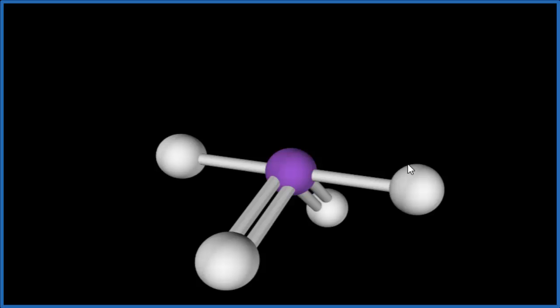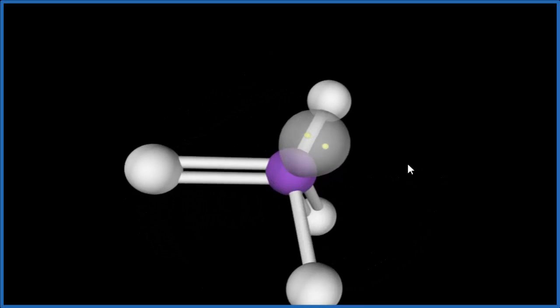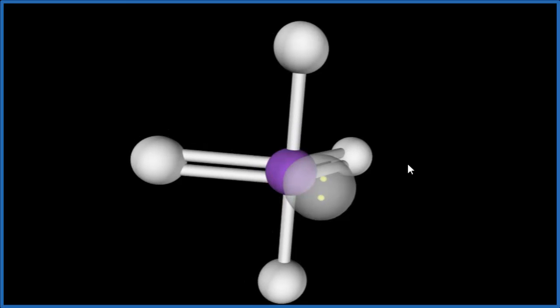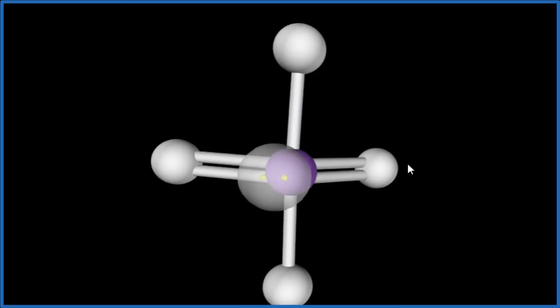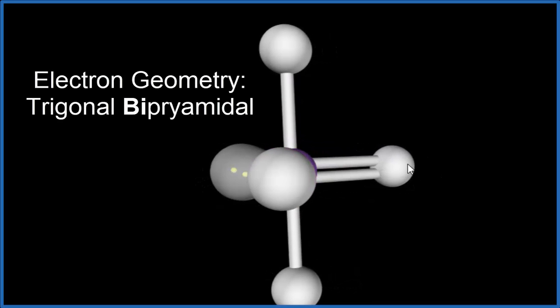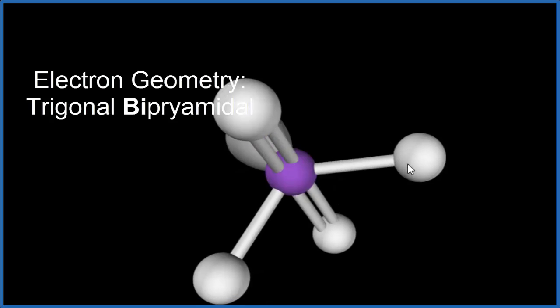If we wanted to look at the electron geometry here, we'd take into account these electrons, this lone pair here. It's probably best to put it like this here so you can visualize this trigonal bipyramidal electron geometry. So the electron geometry is trigonal pyramidal. The molecular geometry, that's the seesaw that we talked about.